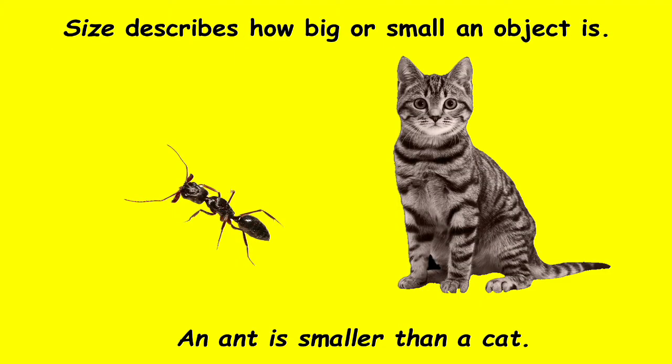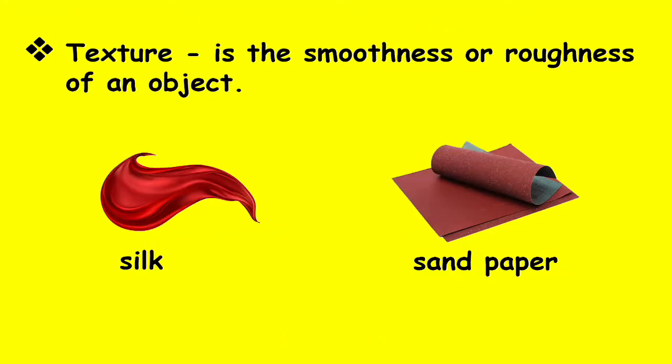Size describes how big or small an object is. For example, an ant is smaller than a cat. Texture is the smoothness or roughness of an object. Things may be smooth like silk or rough like sandpaper.